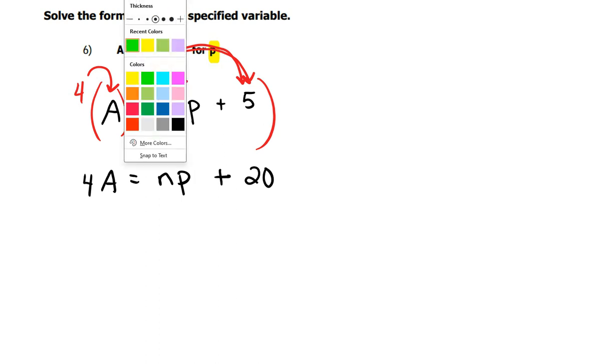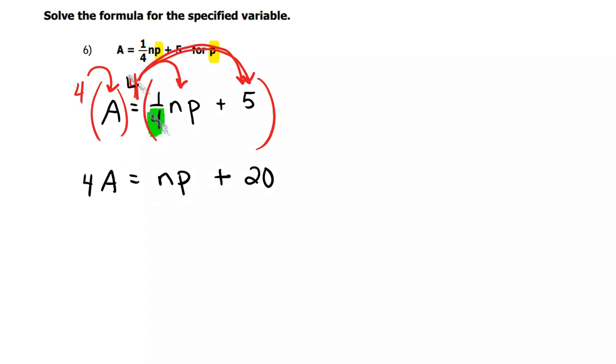Now keep in mind, we are supposed to be solving for the P right here. So focusing on that P, I got rid of my fractions. I want to get that P by itself. So I have to get rid of the 20, and I have to get rid of the N, and it is much easier to wait to get rid of the N, because it's multiplied onto the P.